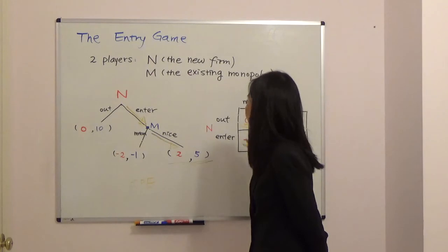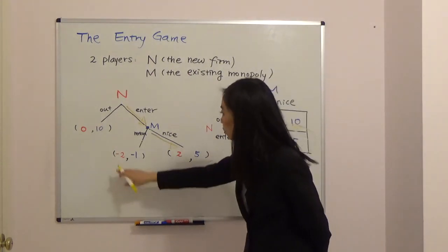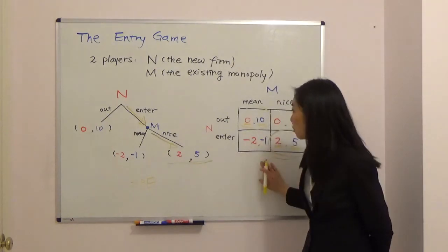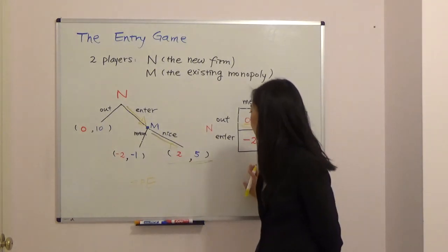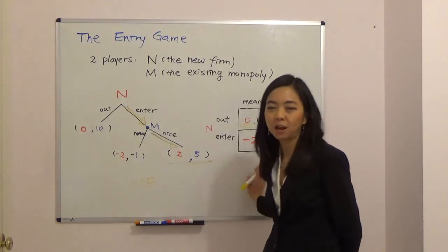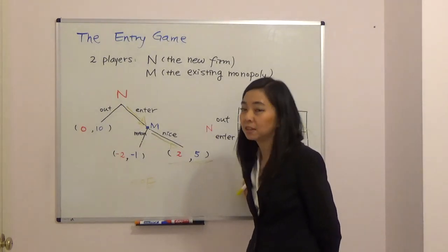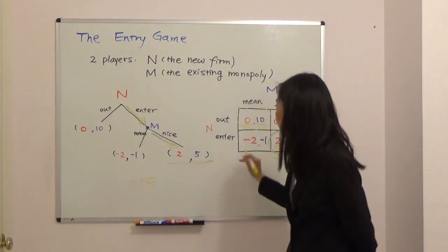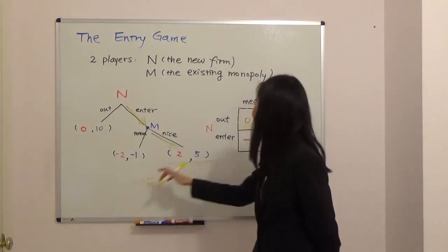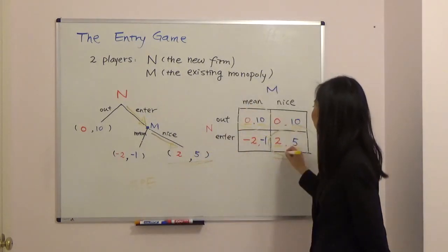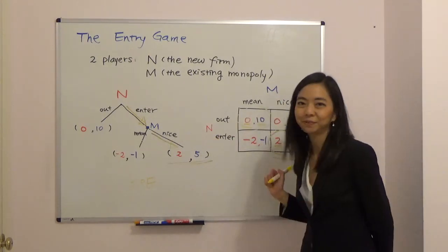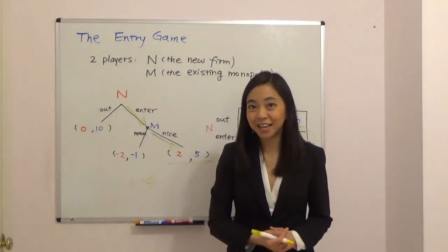So we call it an incredible threat. This is the sub-game perfect equilibrium and how to use backward induction to find it. By solving with the payoff matrix you find all Nash equilibria, but in this game only one Nash equilibrium is sub-game perfect: the new firm enters and the monopoly plays nice. I hope this helps, and I'll see you next time.